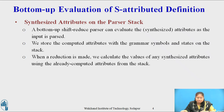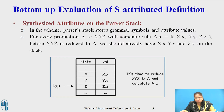Synthesized attributes on the parser stack: a translator for s-attributed definition can be implemented with the help of an LR parser generator. From the s-attributed definition, the parser generator constructs the translator which evaluates the attribute as it parses the input. A bottom-up parser uses a stack to hold information about the subtrees that have been parsed. An extra field in the parser stack is used to hold the value of the synthesized attribute. The figure on the slide shows an example of a parser stack with space for one attribute value. Suppose the stack is implemented by a pair of arrays, state and val. If the state symbol is A, then val[i] will hold the value of the attribute associated with the parsed tree node corresponding to this non-terminal A. The current top of the stack is indicated by the pointer top.